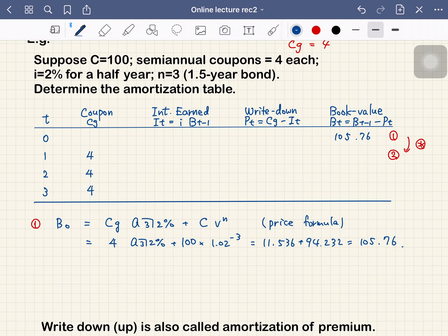Now we can calculate everything by recursive formulas. First, 105.76 is the book value. Interest earned is i times the previous book value. I is 2%, so 2% times 105.76 equals 2.12.